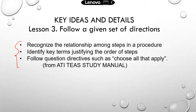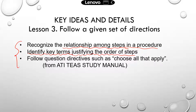You need to recognize the relationship among different steps in the procedure — what happens first, what happens next, and what happens last. You also need to identify key terms to help you justify the order of the steps. Key terms include things like first, second, next, after, last, or finally. Those are the key terms you're looking for when you read the procedure.